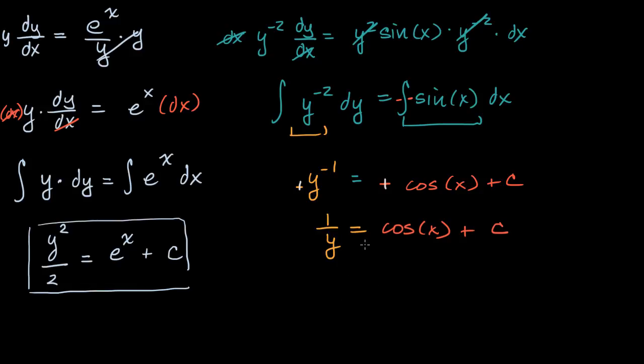Or I can take the reciprocal of both sides, if I want to solve explicitly for y. I could get y is equal to one over cosine of x plus c, as our general solution. And we're done. That was strangely fun.